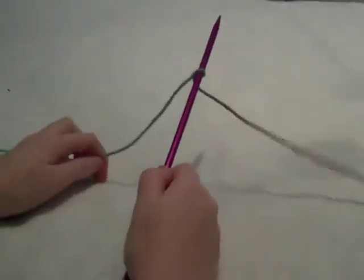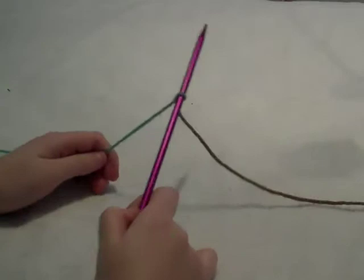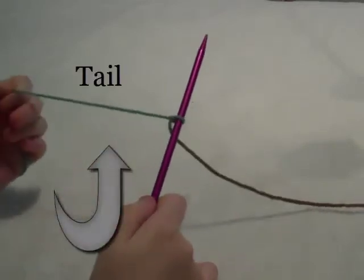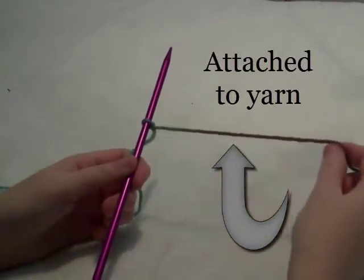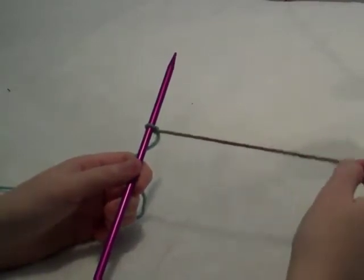To cast on for knitting, you're going to need to start with the slip knot. Your tail will be on the left hand side and the string attached to your yarn will be on the right hand side.